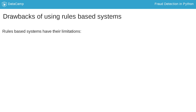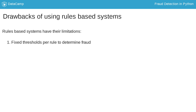A major limitation of rules-based systems is that the thresholds per rule are fixed, and those do not adapt as fraudulent behaviour changes over time. Also, it's very difficult to determine what the right threshold should be.